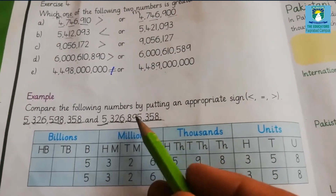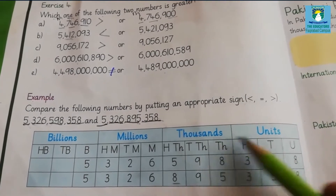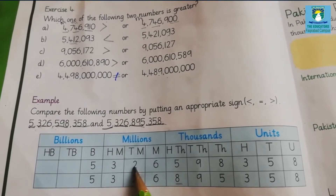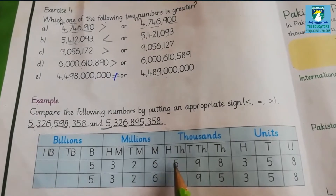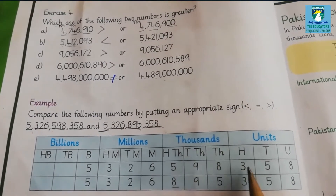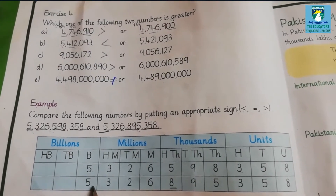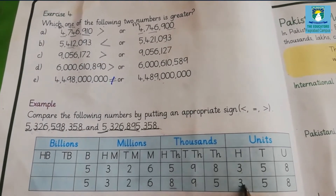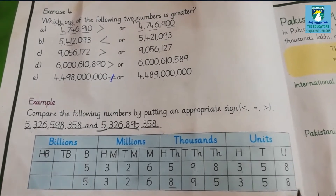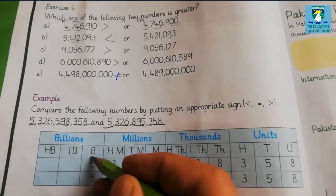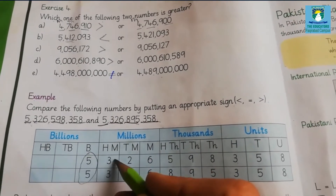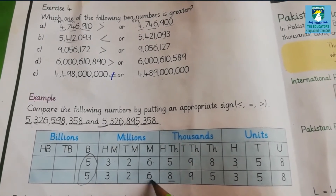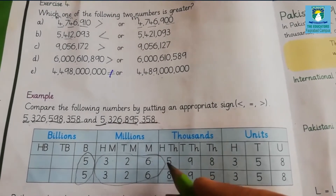Now we will write these two values in the international place value chart to compare them. The first value is 5,326,598,358 and the second value is 5,326,895,358. Comparing billions: they are the same. Move to next — 326 millions in both values, also the same. Move to next.